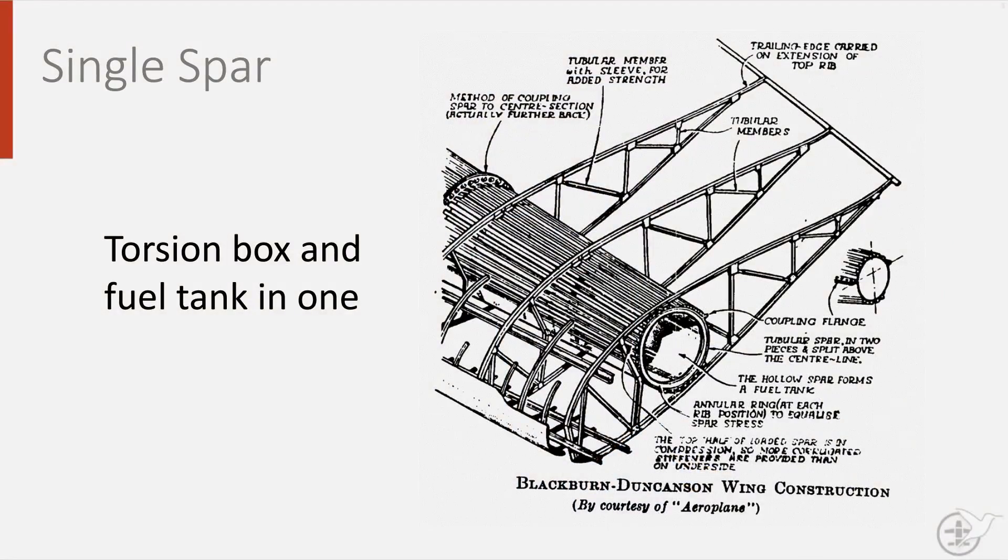In the 1930s, attempts were made to design aircraft wings with circular spars. The British built Blackburn-Buccaneer had a single circular hollow spar that also acted as a fuel tank. However, this concept did not really take off, as the required dimensions of the cylinder for a larger aircraft would be too great to fit into the required aerodynamic wing profile. The concept of a closed torsion box remained.